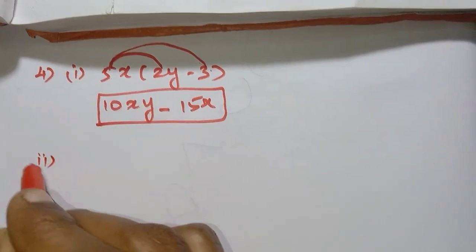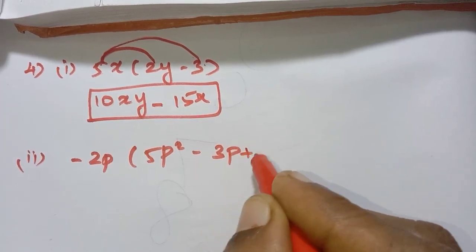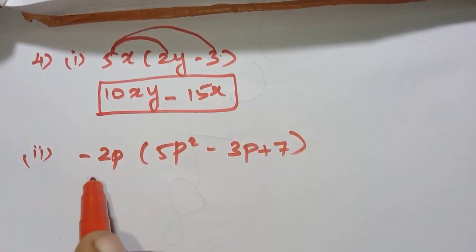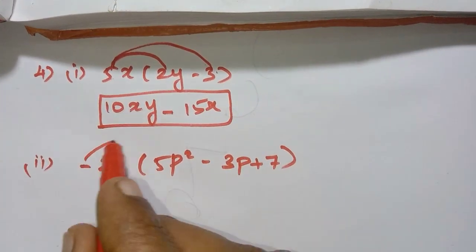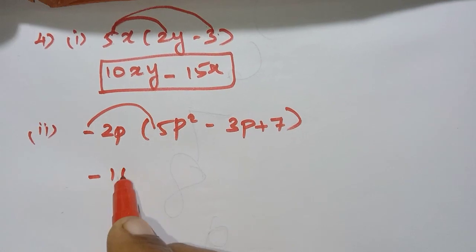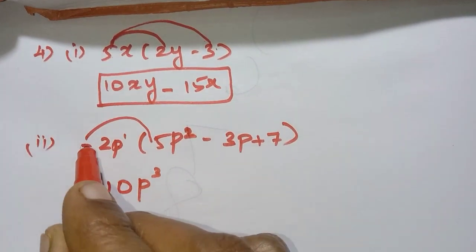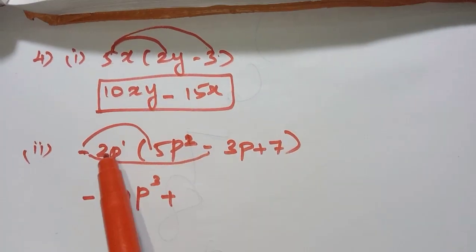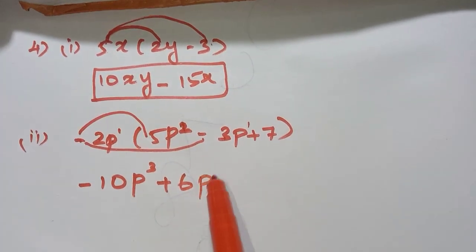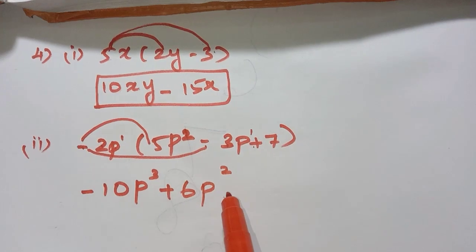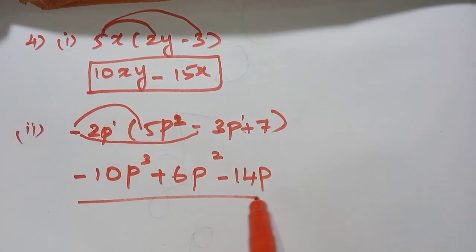Second question: minus 2p into (5p² minus 3p plus 7). Multiply 2p through: minus into plus gives minus 10p³. Then minus into minus gives plus 6p². Then minus into plus gives minus 14p. This is the answer.